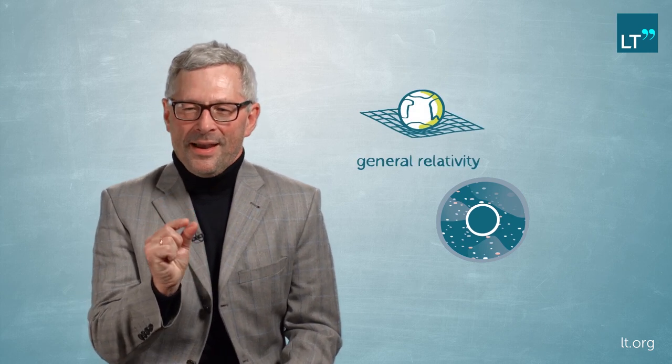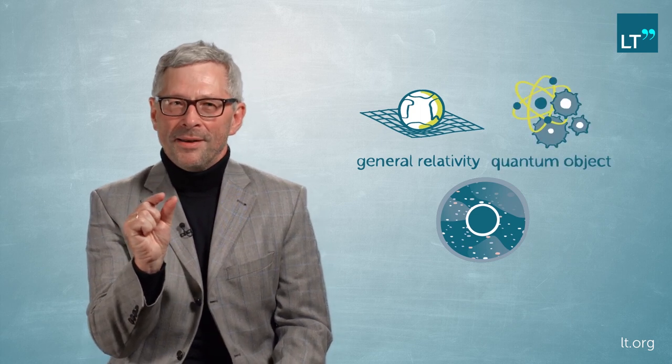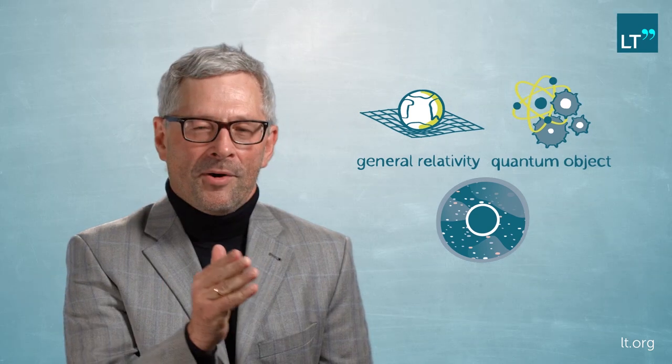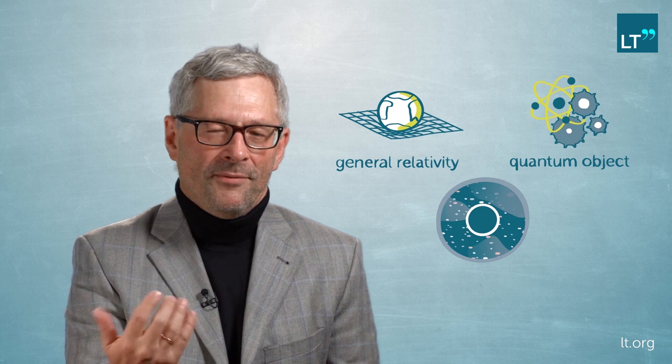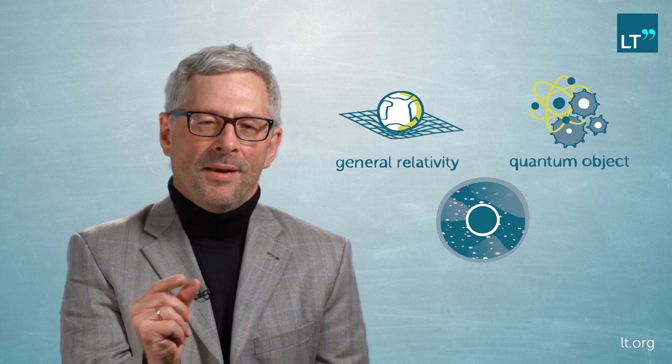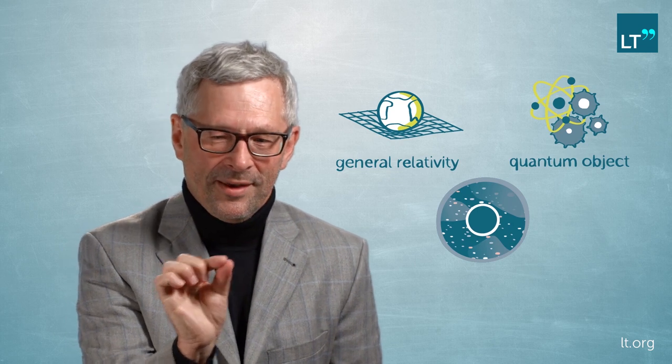But at the same time it is a quantum object. Its size is so small that quantum mechanics matters. Now general relativity and quantum mechanics cannot be unified, because general relativity is not part of quantum mechanics, and quantum mechanics predicts that everything is extended, and general relativity says that the event horizon is infinitely thin.